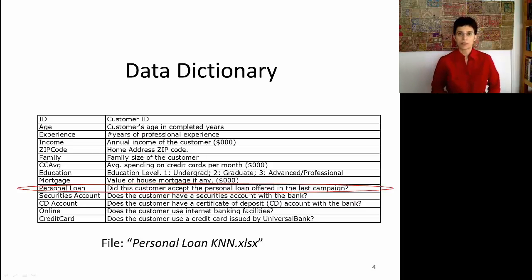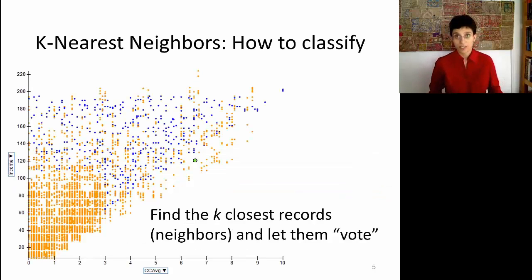We'll use this example to illustrate a few of the next classifiers. The first step is always to try and plot the data, and we talked about interactive visualization. For example, I can plot here two of the predictors on the axes, income and credit card average, a monthly average credit card spending. And then I use color to denote the Y variable, which is the acceptors versus the non-acceptors.